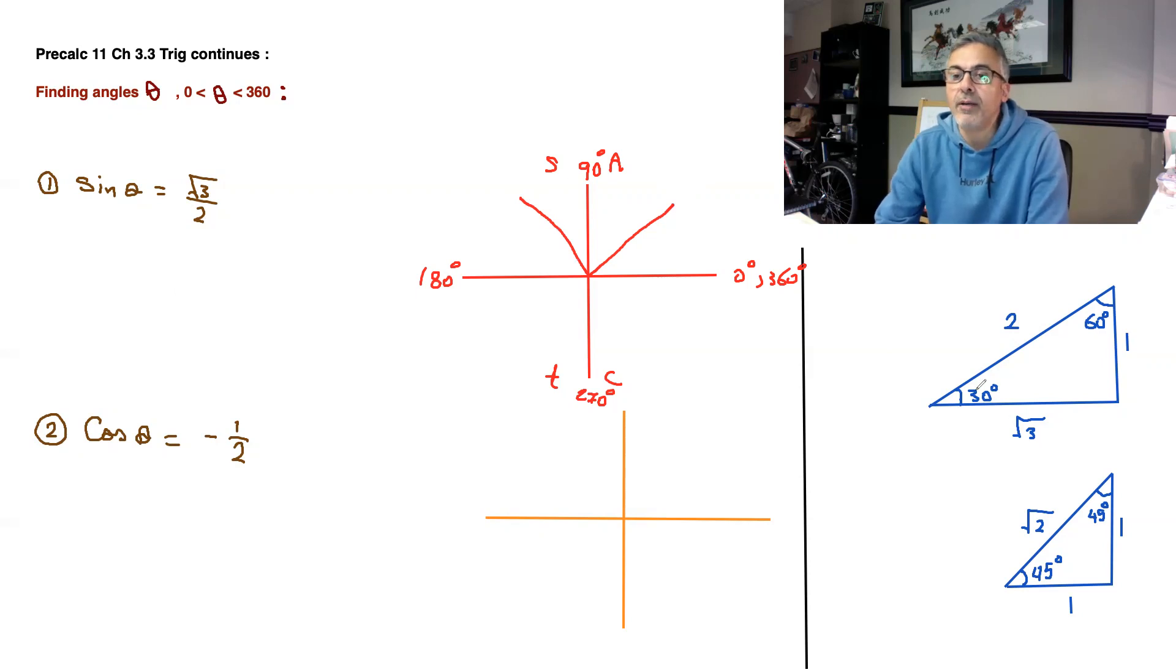So if you go look, and if you look at the sine of 30, it's one half, so it's not 30. But if you look at the sine 60, the opposite is root 3, the hypotenuse is 2. So it's the angle 60 that has a sine of root 3 over 2. Therefore, your reference angles here are going to be 60 degrees.